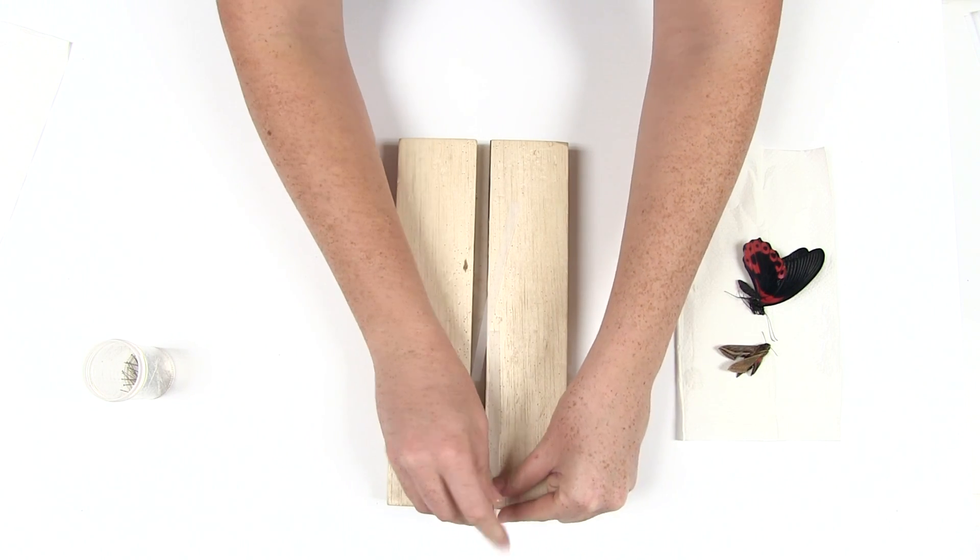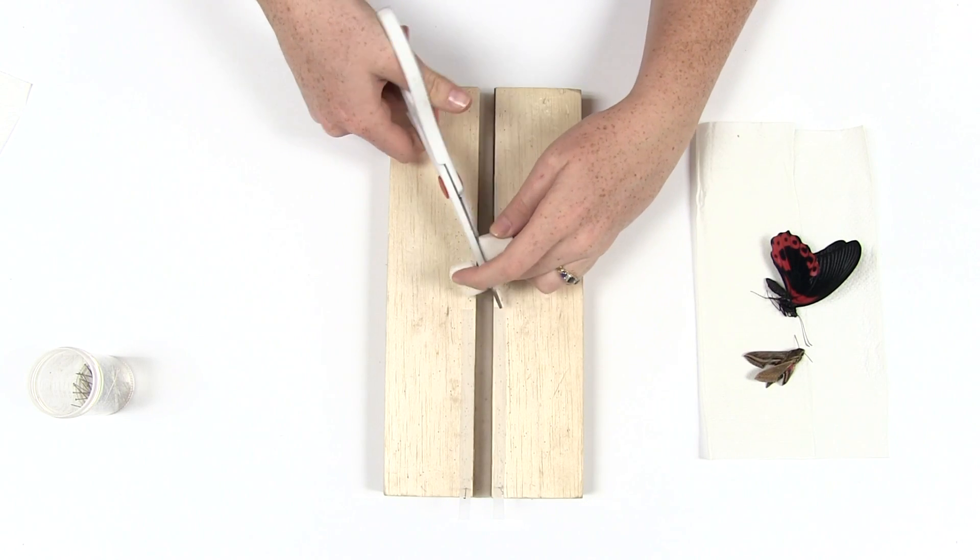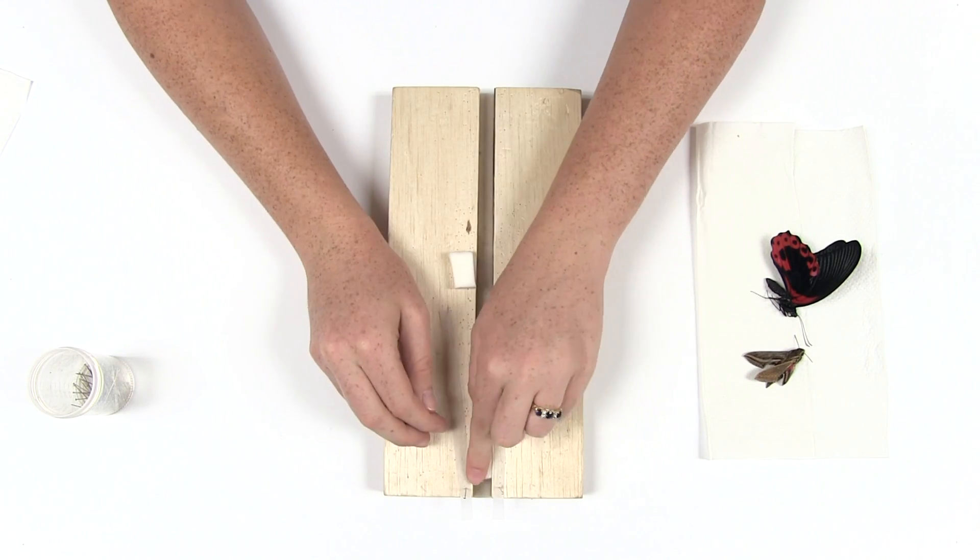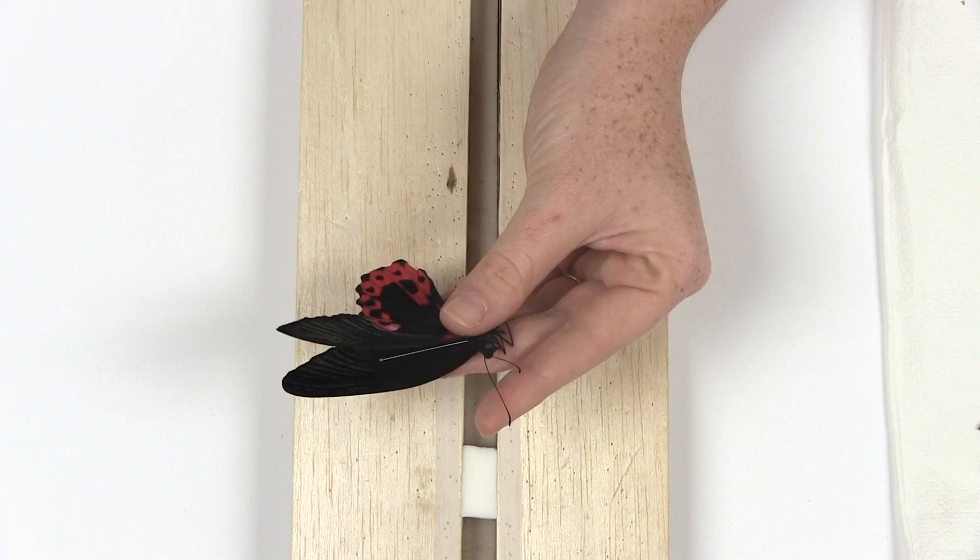Pin the strips at the end of the spreading board on either side of the gap. Cut strips of foam the same thickness as the gap in the spreading board and insert the foam into the spreading board. This can be done before or after the insect is pinned.